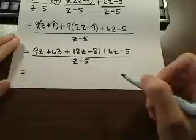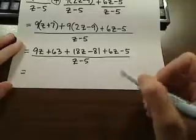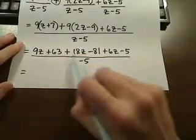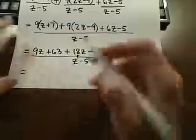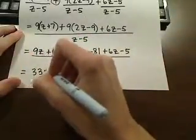And let's go ahead and collect like terms. So our 9z, our 18z, and our 6z. So that's looking like 33z to me.